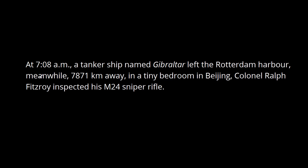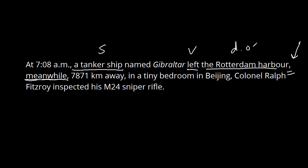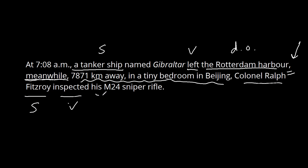Let's take a closer look at an example of how a conjunctive adverb is being used in a sentence. As we'll see, there's actually a problem with this usage, especially in terms of punctuation. There are two independent clauses that the conjunctive adverb is trying to join. The first clause has 'a tanker ship' as the subject, 'left' as the verb, and 'Rotterdam Harbor' as the direct object. The second clause has some introductory information, then the subject 'Colonel Ralph Fitzroy,' 'inspected' as the verb, and 'his M24 sniper rifle' as the direct object.